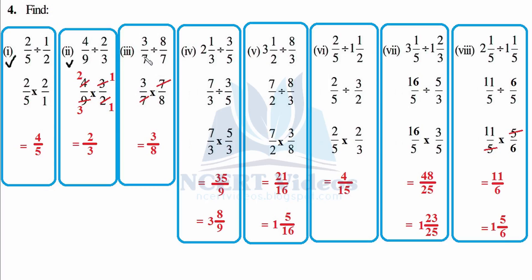Third: 3/7 divided by 8/7 — when we flip it, it becomes 7/8. Now cutting: 7 and 7 cancel, so it is 3/8 — again proper. Fourth: 2 and 1/3 — that is 3 times 2 plus 1 is 7 over 3, divided by 3/5.